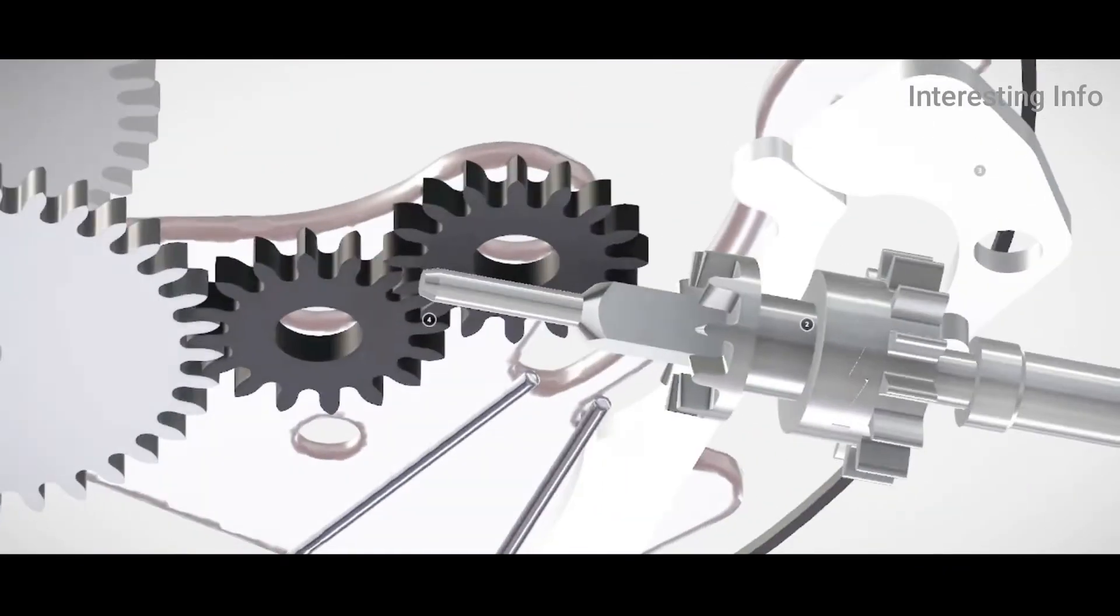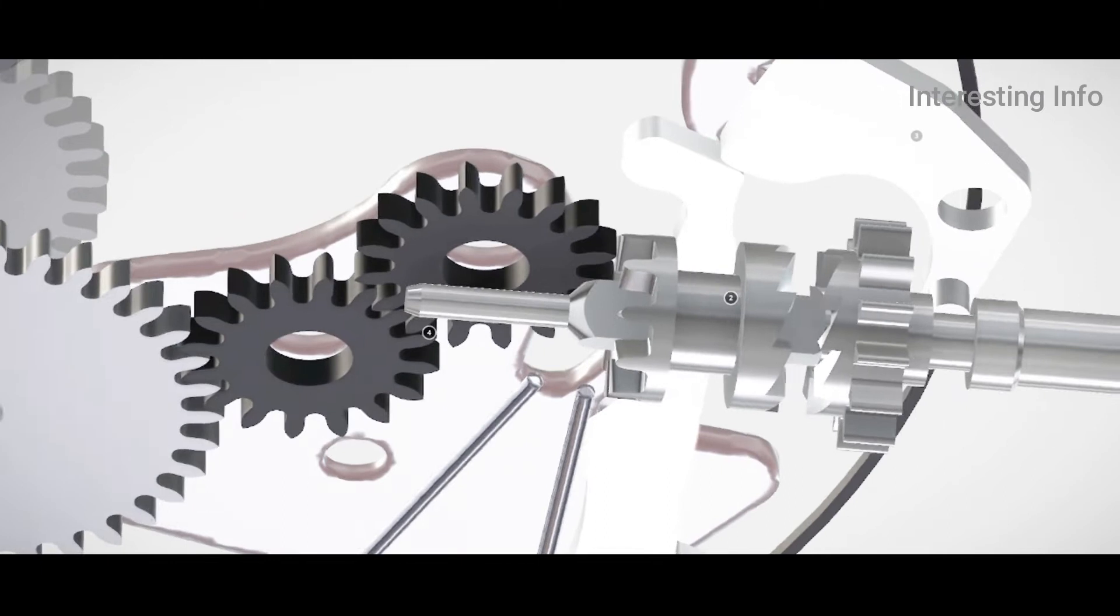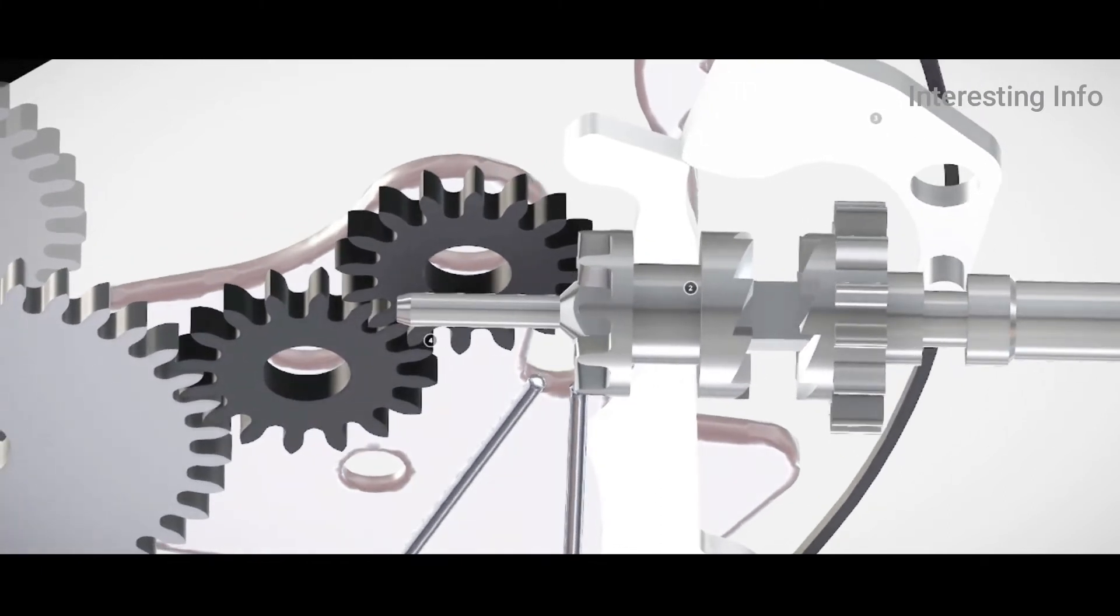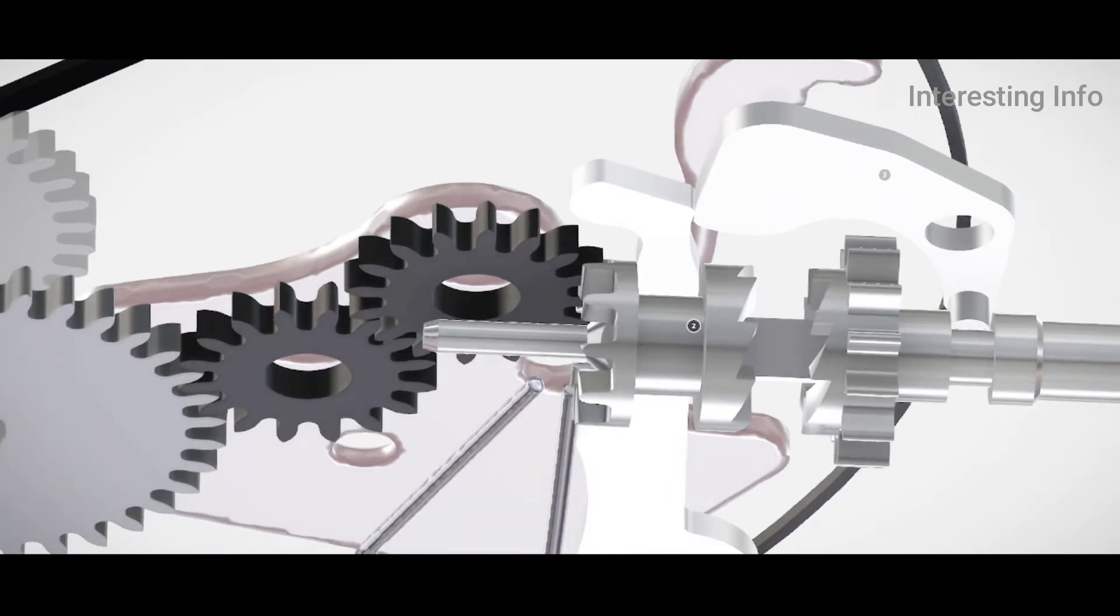When you wind up your watch, the wigwag pinion is held against the winding pinion thanks to the yoke. The square part of the stem drives the wigwag pinion that in turn drives the winding pinion thanks to its breguet toothing.